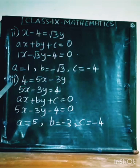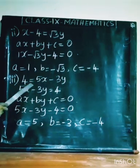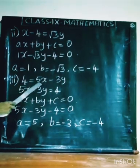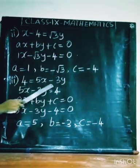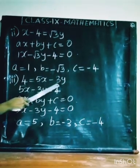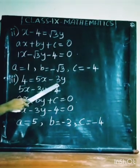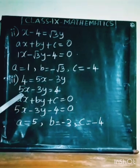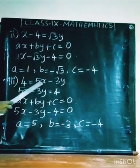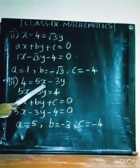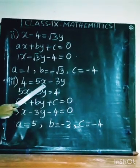Subdivision 3: 4 equal to 5X minus 3Y. We have to rearrange into the general form.